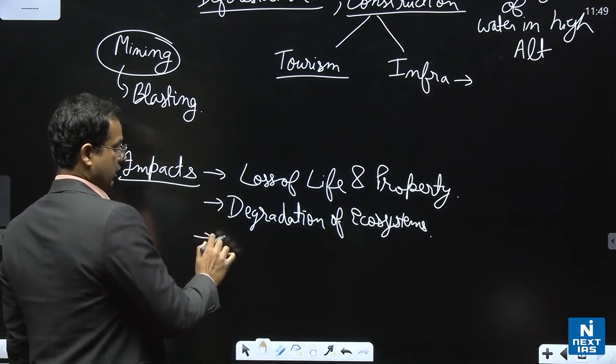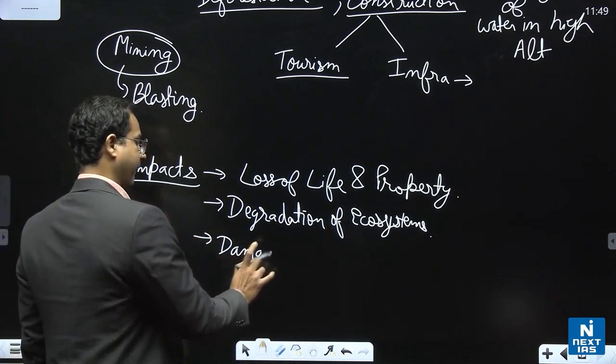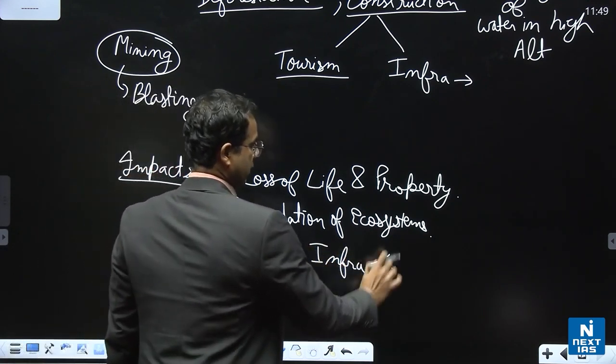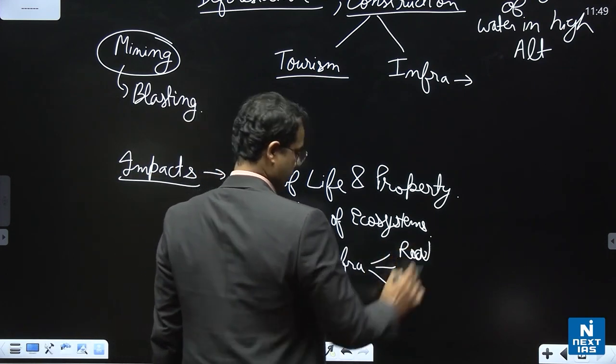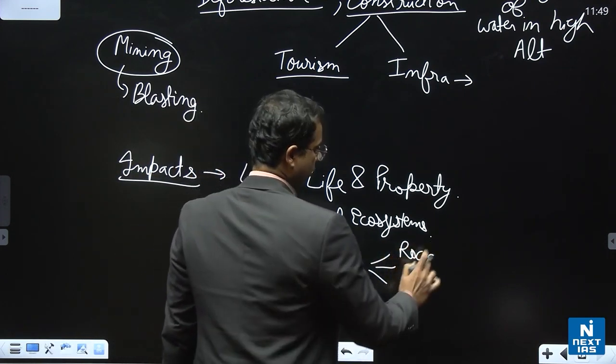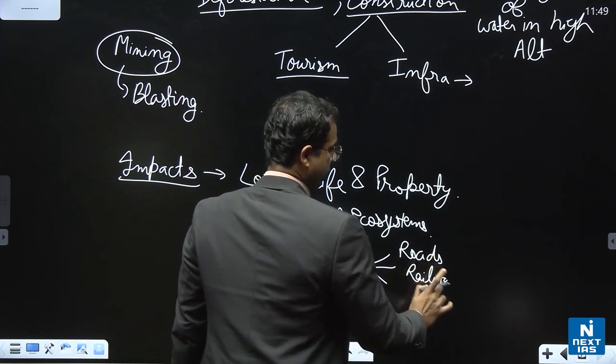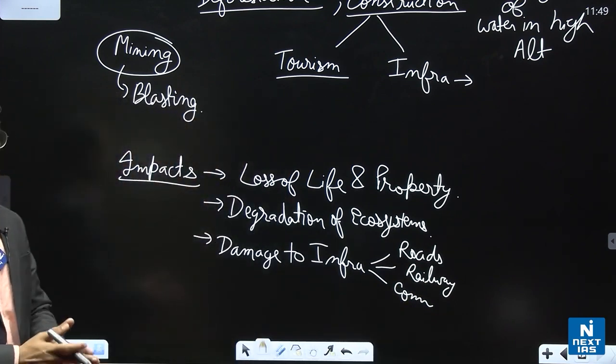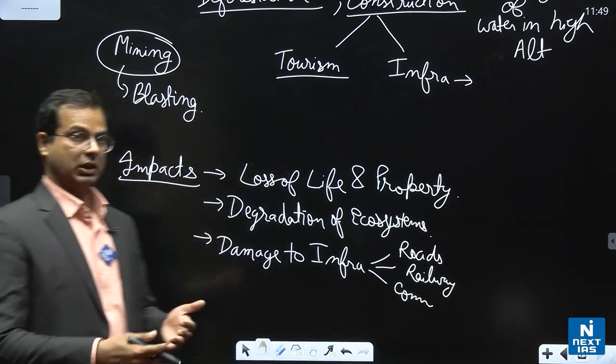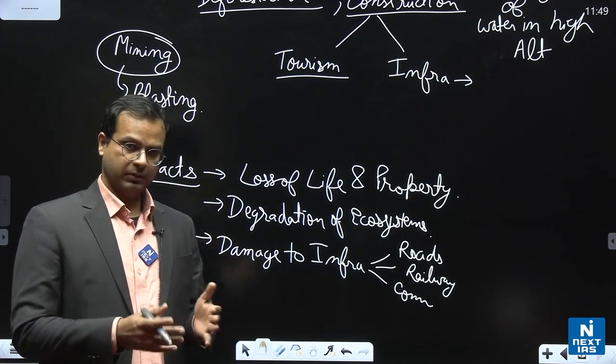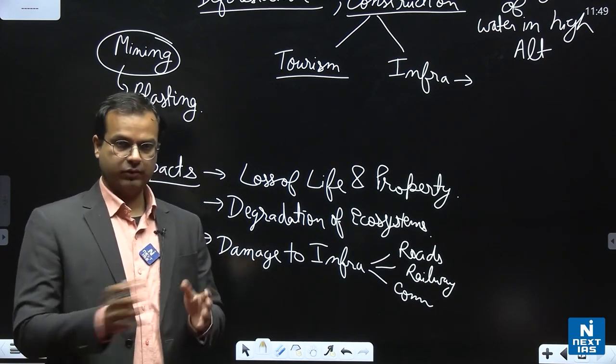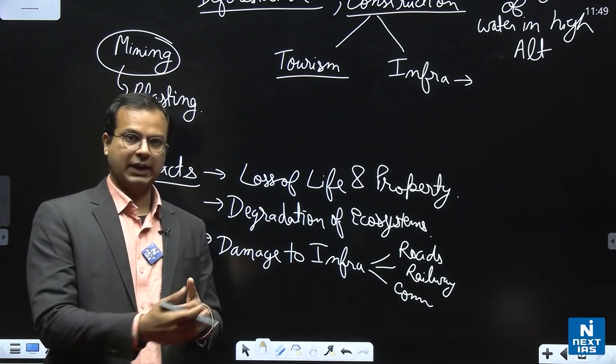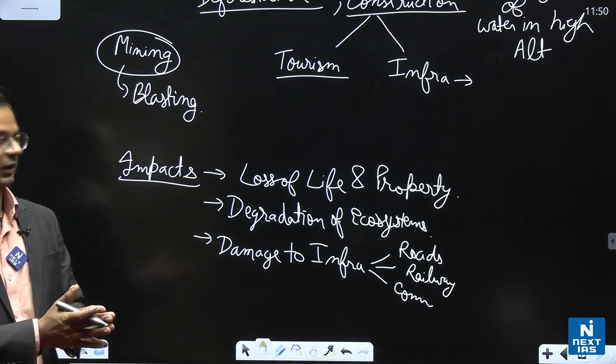Other impacts can be damage to property, damage to property, damage to infrastructure. Example - roads, railways, communication lines, these can be damaged. So this can have a large, long-term economic impact also. For example, if an area is cut off from the rest of the country and many years are taken to rebuild the roads again, that can have long-term economic impacts on that area.